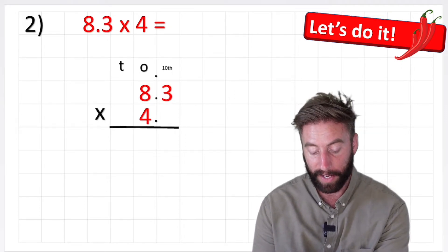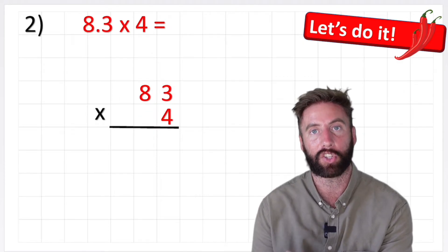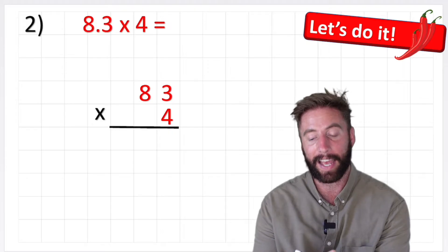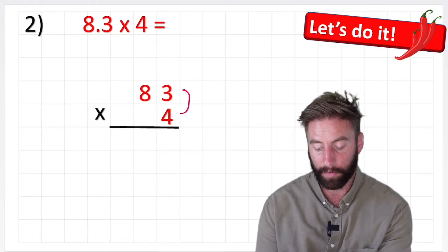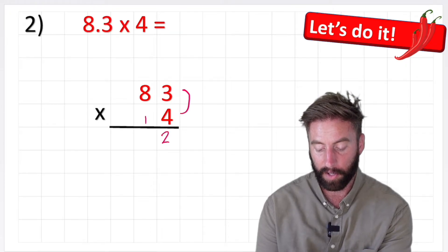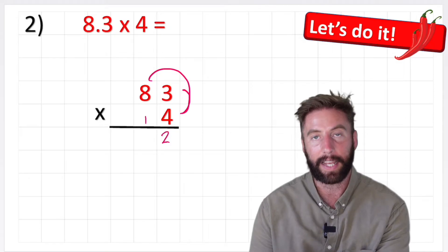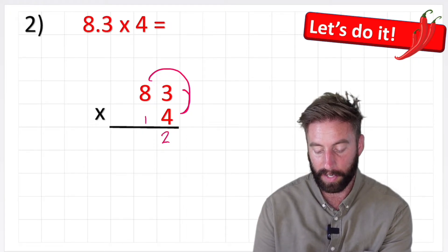But in this case we're going to forget the decimal for now and make it just 83 times 4. And again, we can now just simply work this out: 4 times 3 is 12, 4 times 8 is 32, plus the 1 is 33.